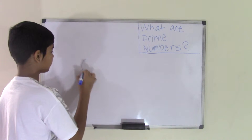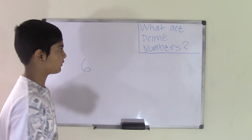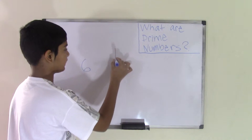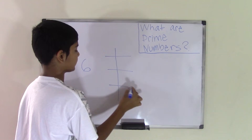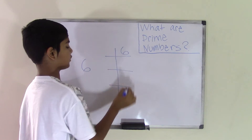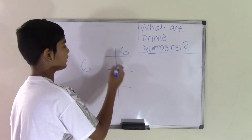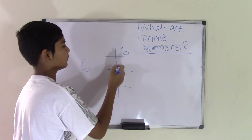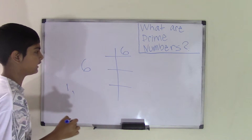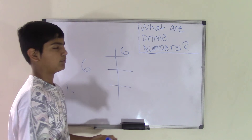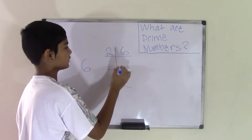Let's do another example. Let's take the number 6 and find its factors. Remember to create a line and we're going to take 6 and break it down in its smallest form. You cannot start with the number 1 — that's automatically in your list. You start with the number 2.